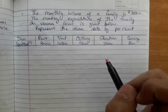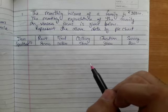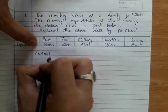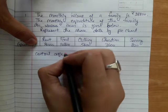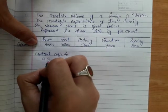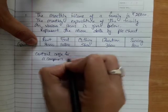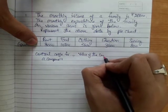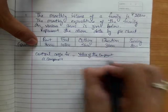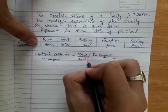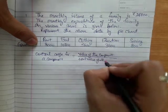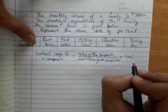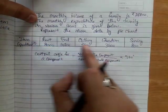The first step to draw a pie chart is to calculate the central angle for each component. The formula is: central angle for a component equals value of the component divided by total value of all components, multiplied by 360 degrees.